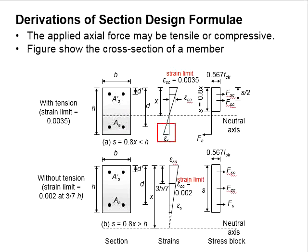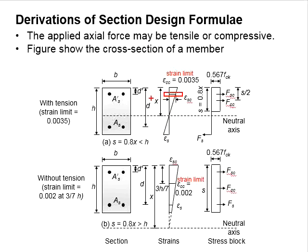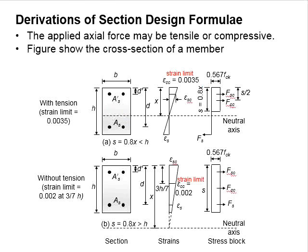When tensile stress exists in the column, the strain limit for compression is 0.0035, which normally occurs at the top of the column with maximum strain. Assuming strain varies linearly across the cross-section, the strain in the steel bar can be obtained through interpolation. x here refers to the position of the neutral axis. The size of the stress block is taken as 0.8 times x.